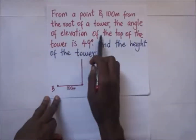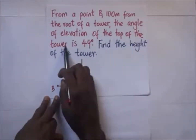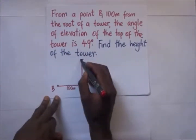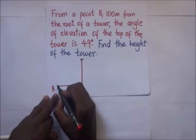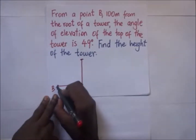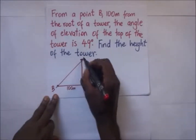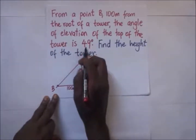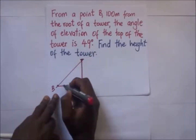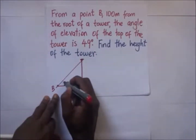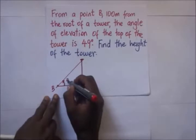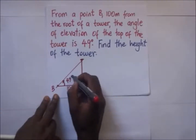They are telling us the angle of elevation of the top of the tower is 49 degrees. It means that if this is the top of the tower, the person seeing is able to see the top of the tower at 49 degrees — that is the angle of elevation. So the angle from the horizontal to the line of sight is 49 degrees.